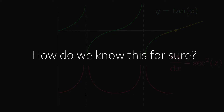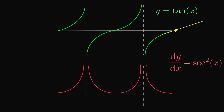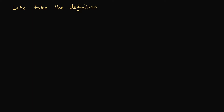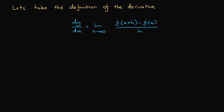How do we know that the derivatives we have drawn are actually cosine x, minus sine x, and secant squared x, and not just graphs that look very similar? We need to prove it. To do this, let's take the definition of the derivative: dy/dx equals the limit as h approaches 0 of [f(x+h) minus f(x)] all divided by h, where y equals f(x).